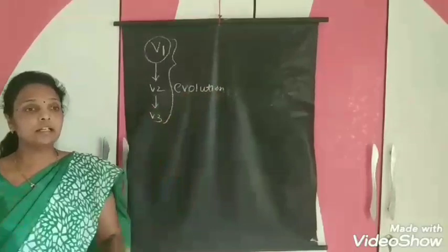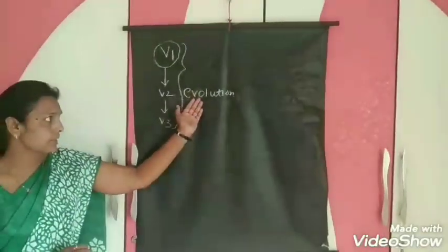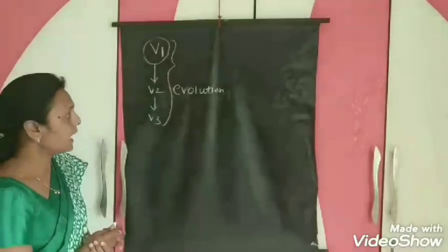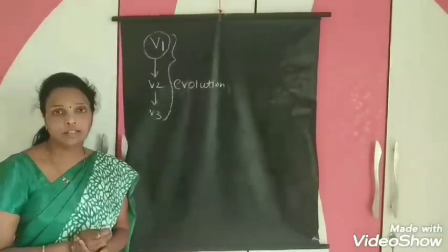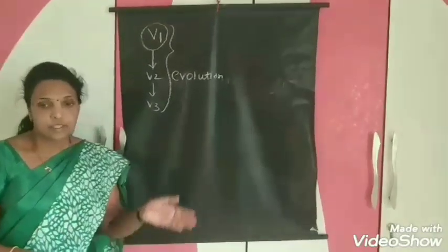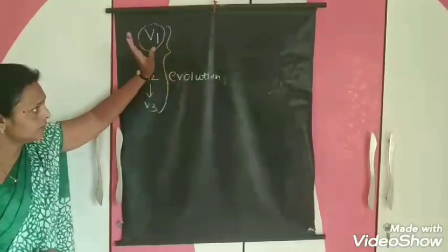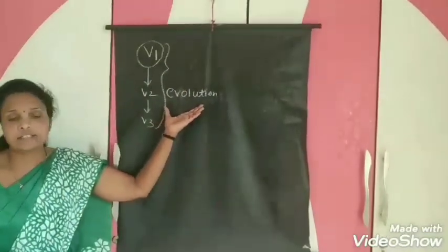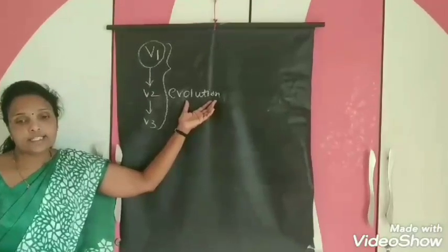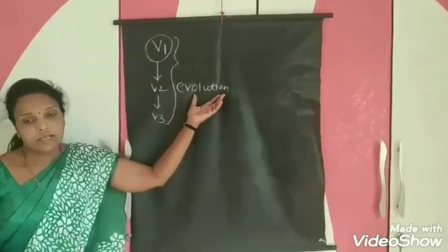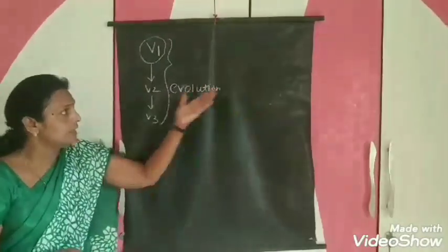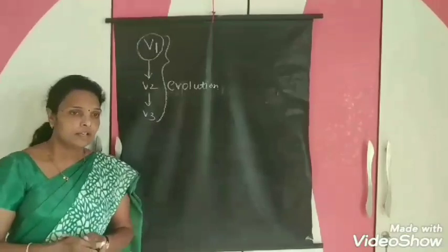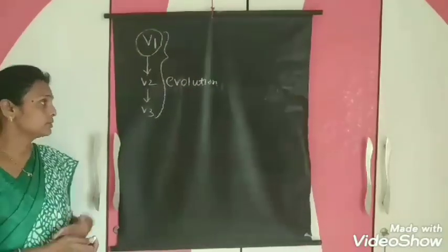Evolution is a step-by-step progress — it is not a sudden process, it takes time. For example, in olden days, human beings were like monkeys. From monkeys or apes, which are our ancestors, we developed into human beings. This step-by-step progress which becomes permanent in our life cycle is known as evolution.